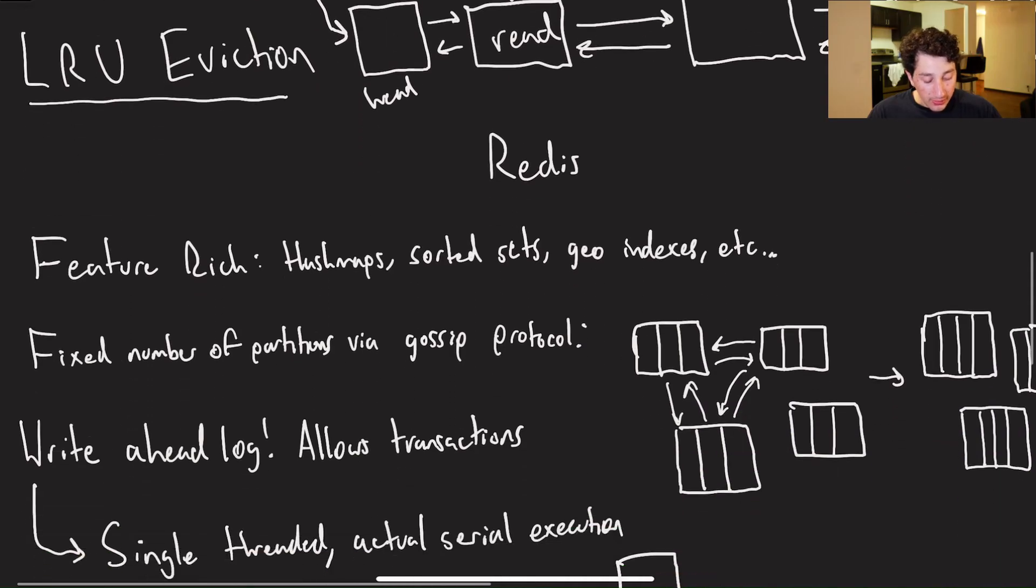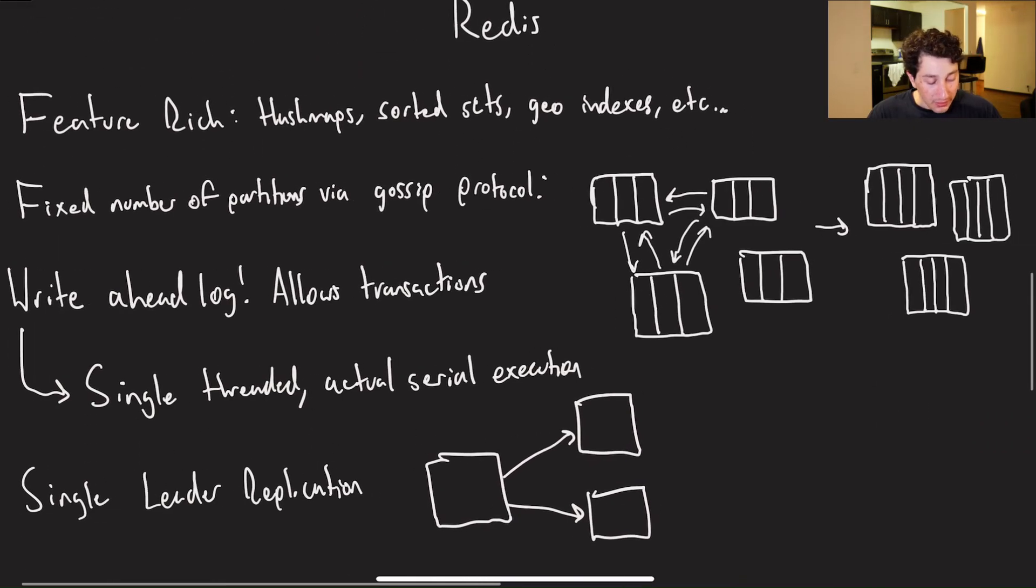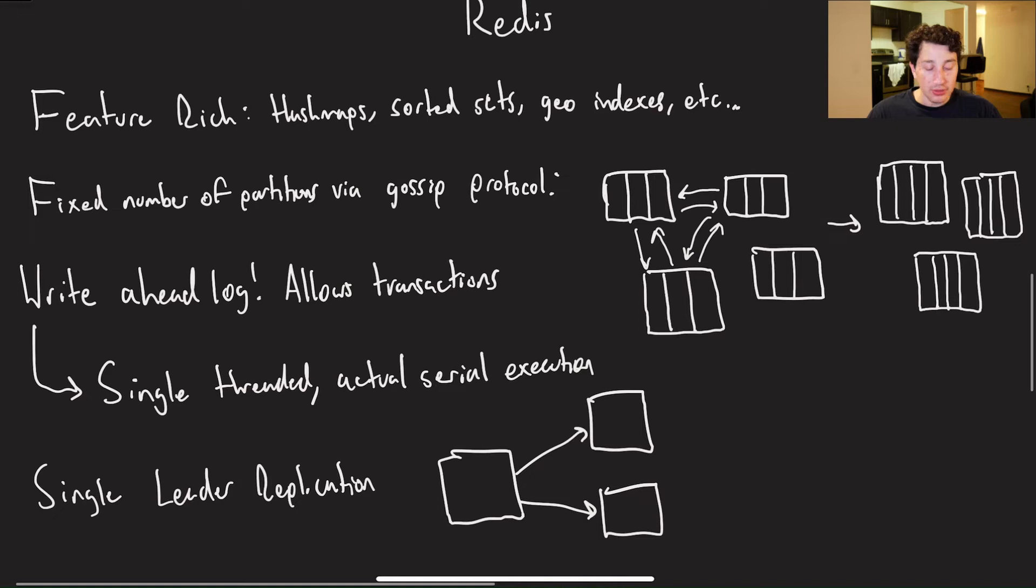Now let's go ahead and move on to Redis and talk about that a little bit. So the main benefit that Redis offers over Memcached is that it's super feature rich. As opposed to just being like a very simple in-memory key value store, you can use hash maps, you can use sorted sets, you can even use geo indexes, and all of those are implemented in memory, which is really great.